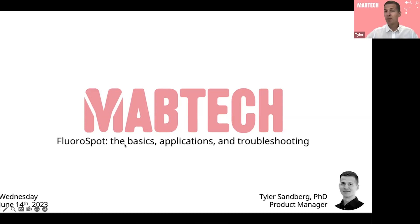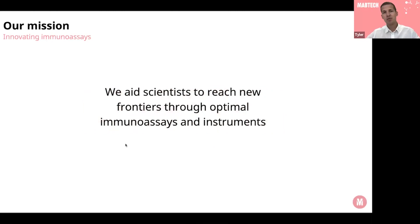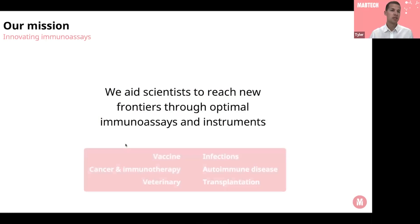A little background about me: I have a PhD in vaccine immunology and did quite a lot of FluoroSpot during my PhD. Made a lot of mistakes and got a lot of help from Mabtech. Here at Mabtech we really want to help our fellow scientists reach new frontiers and answer really cool research questions by providing good immunoassays and instruments. A lot of our products are used in vaccine research, cancer and immunotherapy, veterinary research, infectious diseases, autoimmune disease and transplantation, and even more.